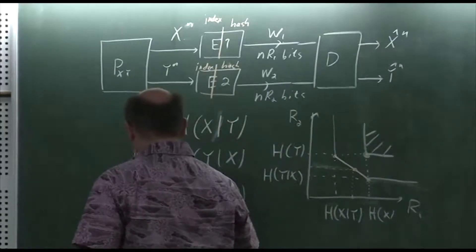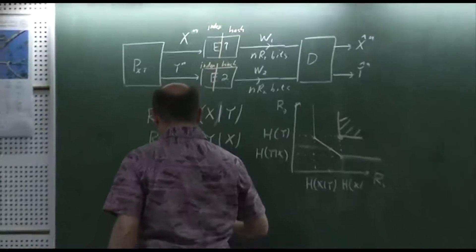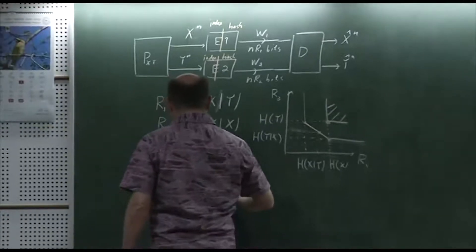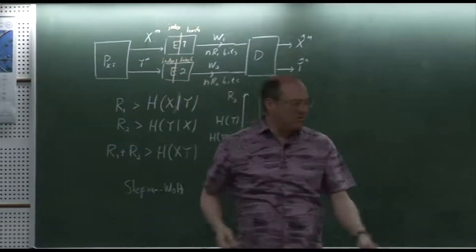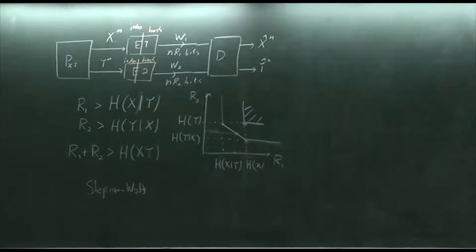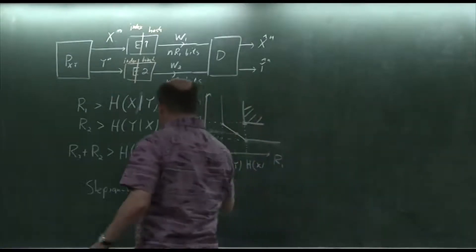This is quite remarkable because we achieve the same rates as if both encoders were cooperating. This was a huge surprise when first discovered around 1972-73 in the paper by Slepian and Wolf, published in 1973 in IEEE Transactions on Information Theory.